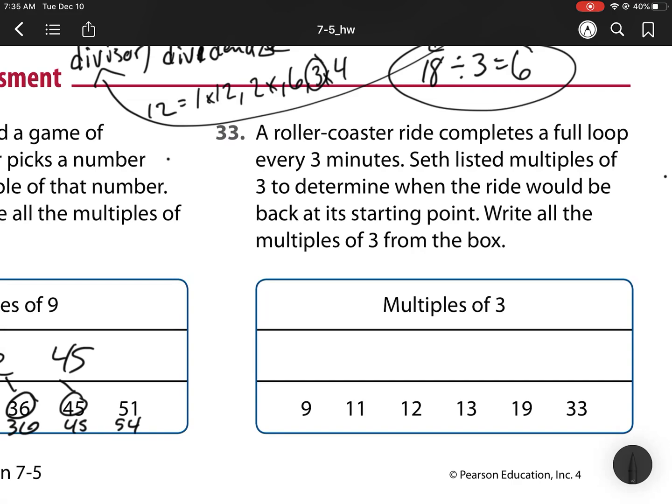On to 33. A roller coaster ride completes a full loop every 3 minutes. Seth listed multiples of 3 to determine when the ride would be back at his starting point. Write all the multiples of 3 in the box. So, I'm thinking, can I multiply 3 times what to equal these numbers? Well, 3 times 3 is 9. So, that is 1. 3 times nothing is equal to 11. 3 times 4 is equal to 12. I can't multiply to get 13. I can't multiply to get 19. But I know 3 times 11 is 33. So, there are my multiples of 3. That's it for lesson 7-5.